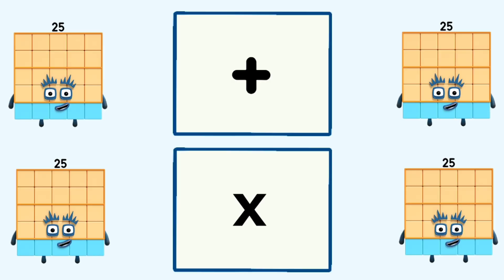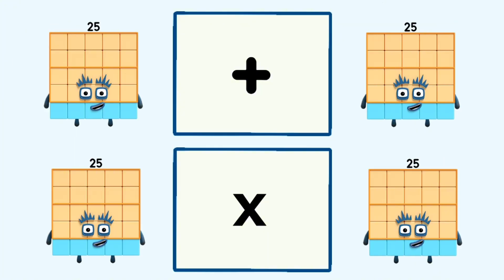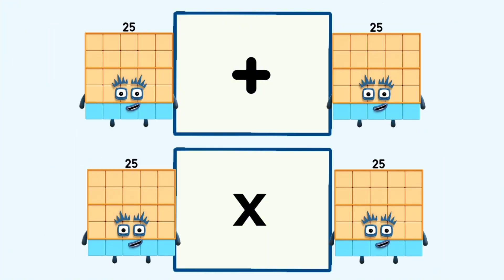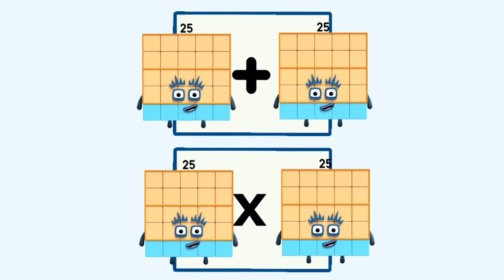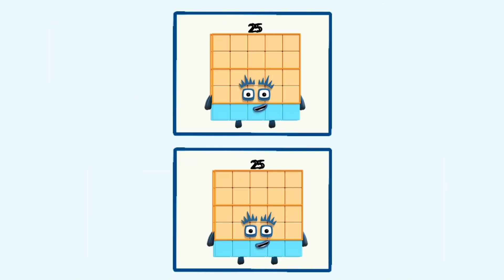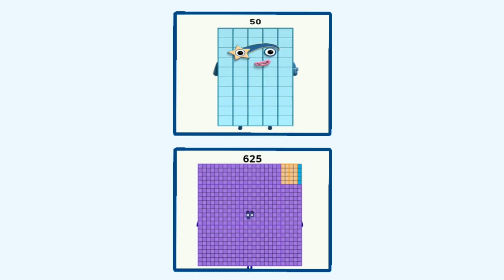25 plus 25 and 25 times 25 equals 50 and 625.